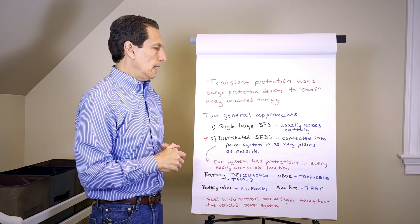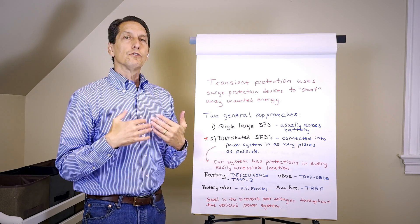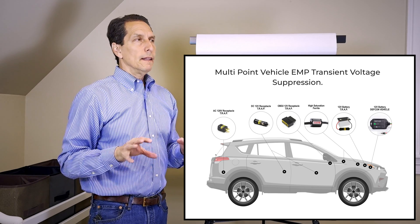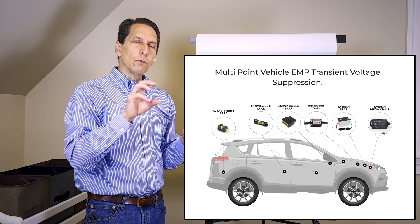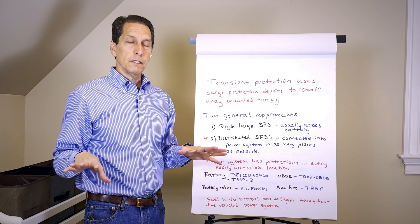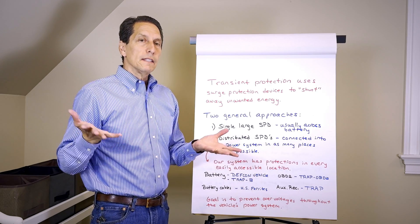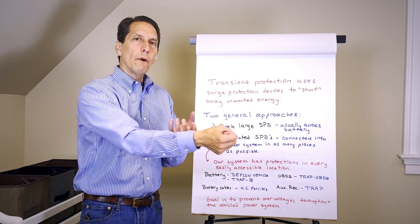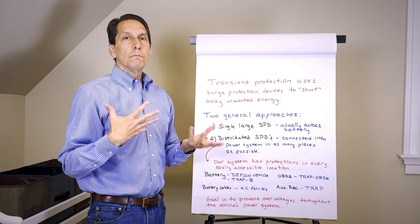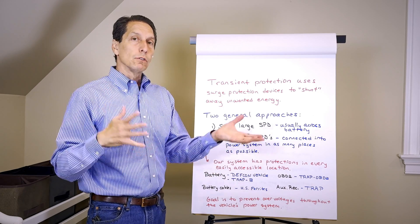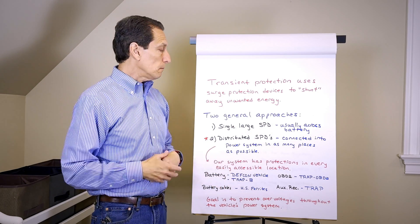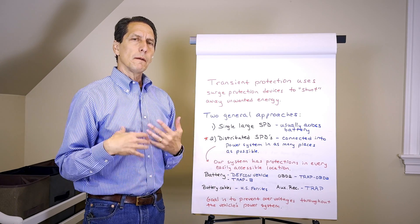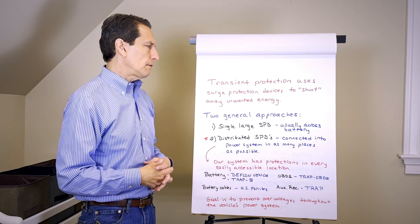The other option is to distribute as many surge protection devices as you can around the vehicle—the idea of stapling down the voltage, the max voltages that can occur in multiple places. As the energy couples into the cables and they start to rise up, they get drained away at lots of places, which is beneficial to all the distributed systems in your vehicle. That's the method I propose. I'm a big proponent of distributed protection. I've found that it works well.